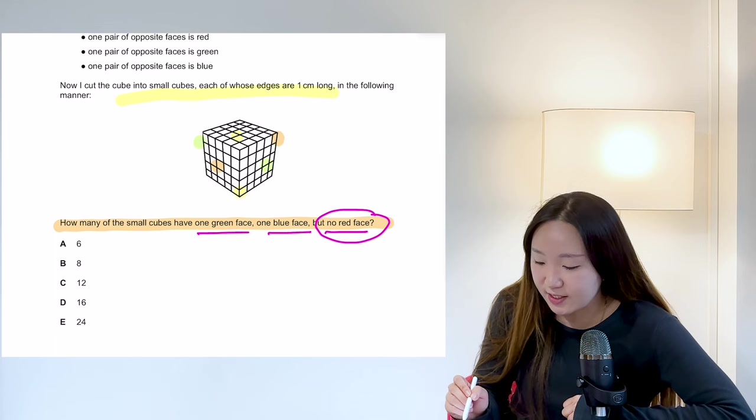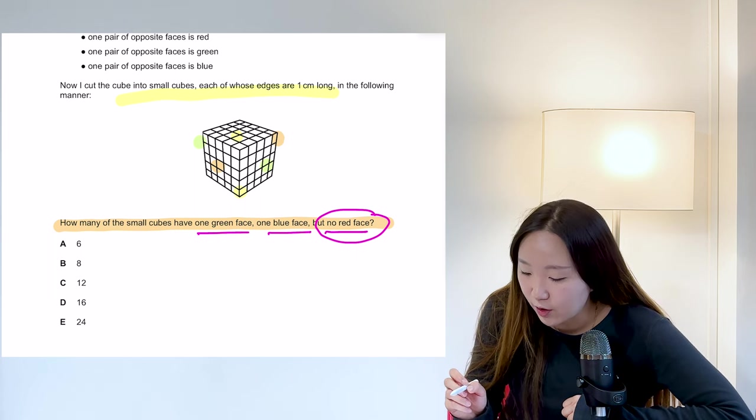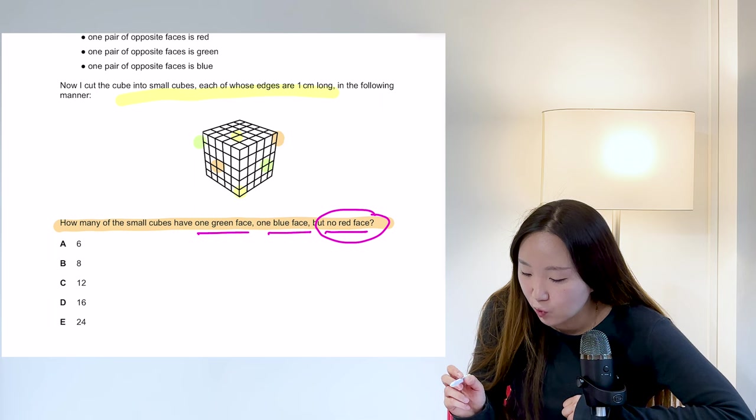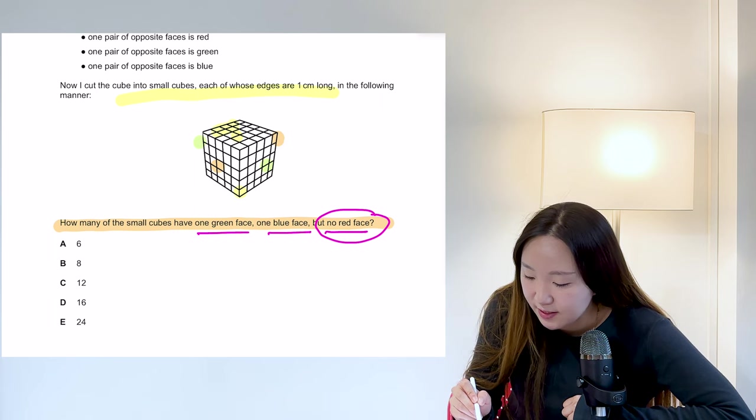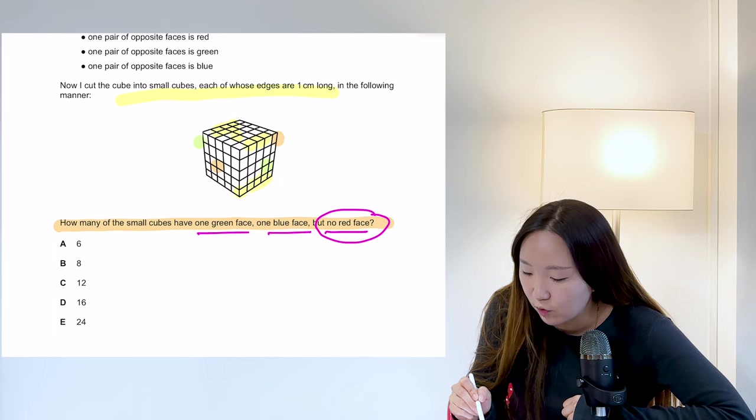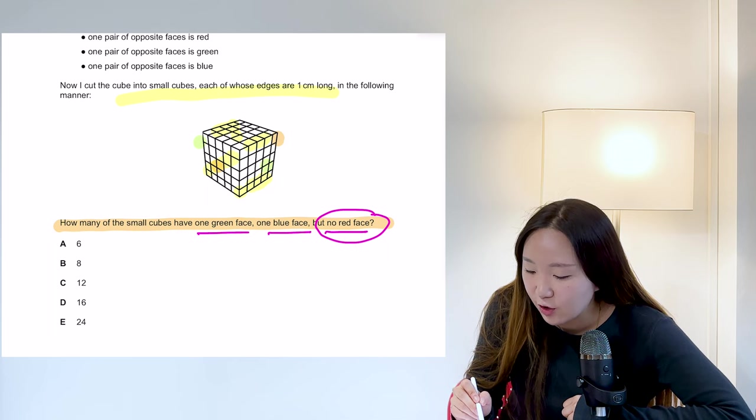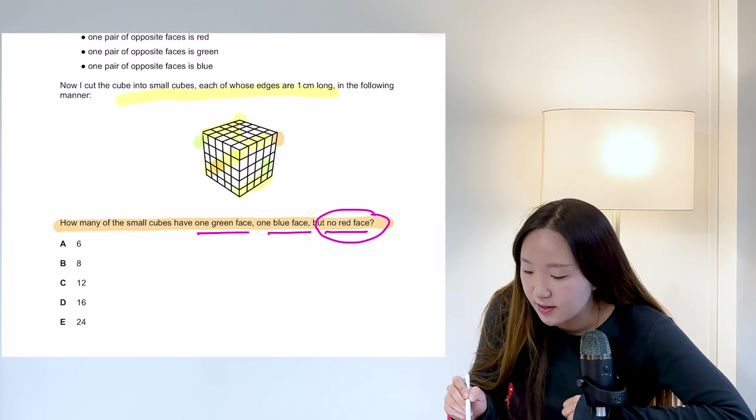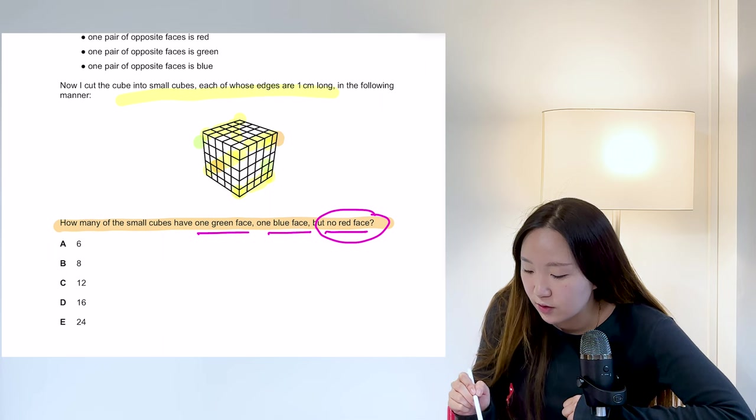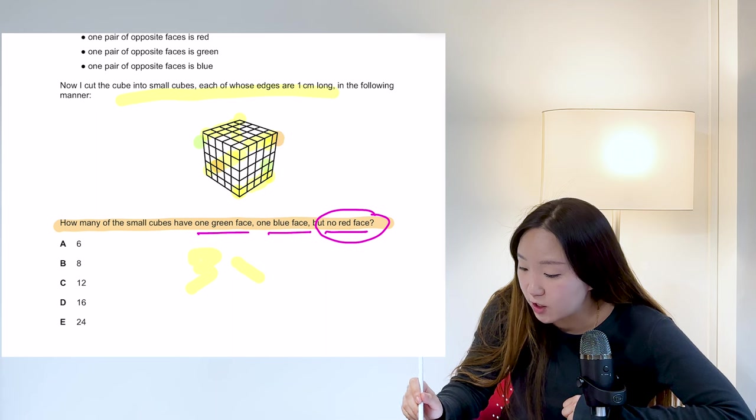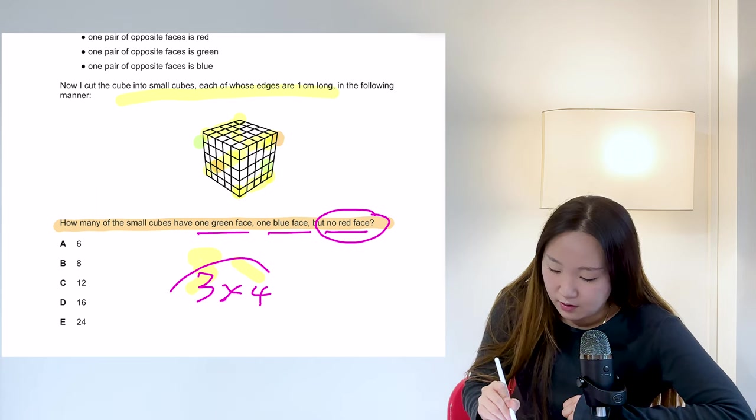So in this case, my orange is going to be the red. So one green and one yellow. So we're basically looking at the edge pieces here, right? So we've got four edges that we could be looking at and you've got to take away the corners because they are all touching red. So it's just the three in the middle times four edges. See.